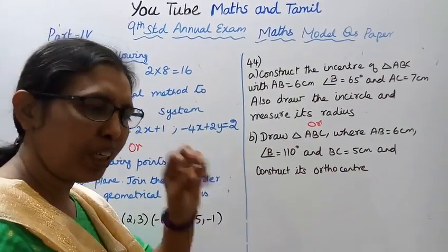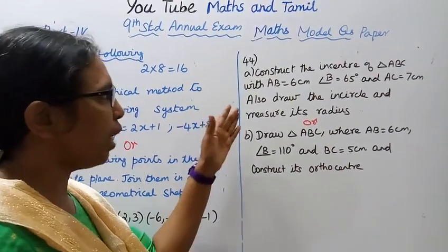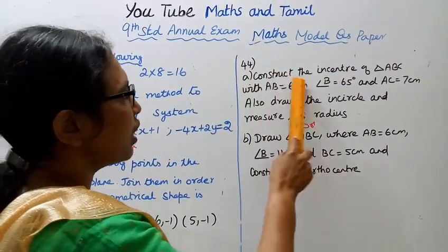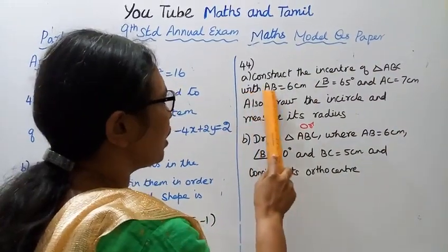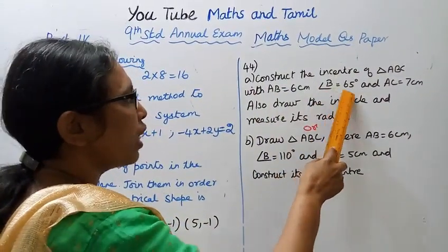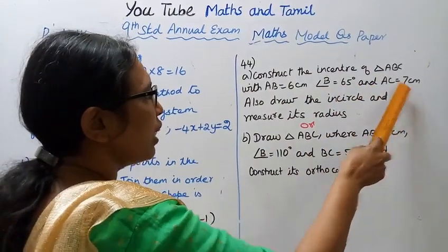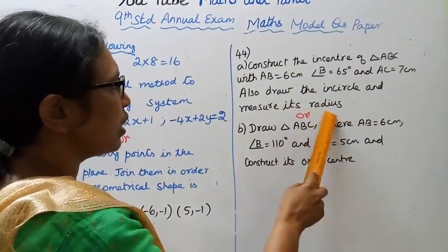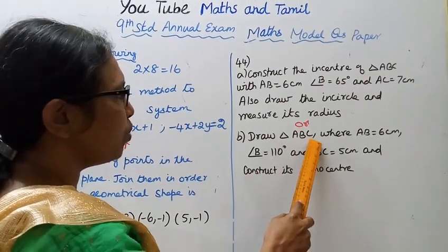Incenter of triangle ABC with AB equal to 6 centimeter, angle B equal to 65 degrees, and AC equal to 7 centimeter. Also draw the incircle and measure its radius. Or, draw triangle ABC where AB equal to 6 centimeter, angle B equal to 110 degrees, and BC equal to 5 centimeter, and construct its orthocenter.